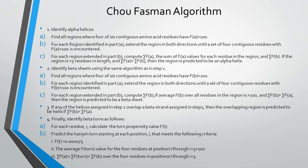Since we are scanning the window and identifying regions of six contiguous residues, there is a possibility of overlap between beta strands from step two and alpha helices from step one. Step three is an effort to solve this overlapping problem. If any helix assigned in step one overlaps a beta strand assigned in step two, the overlapping region is predicted to be a helix if sigma Pa is greater than sigma Pb, and a strand if sigma Pb is greater than sigma Pa.